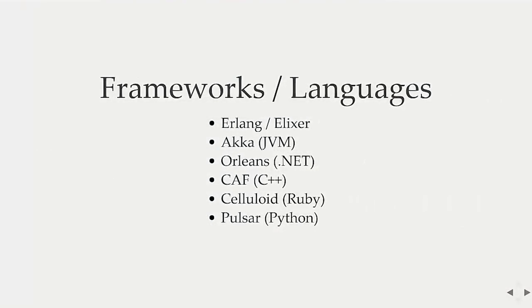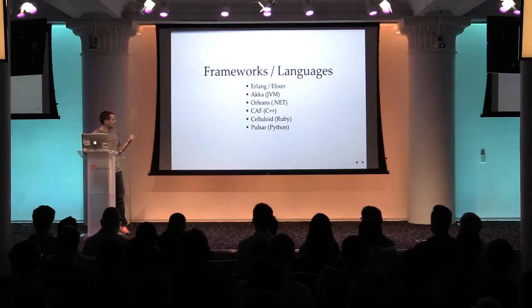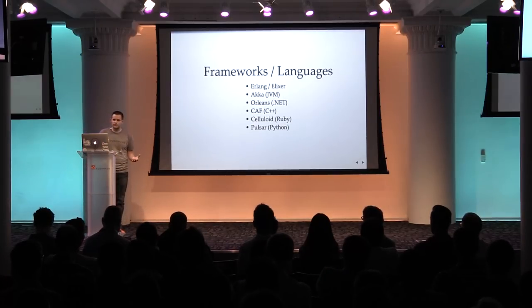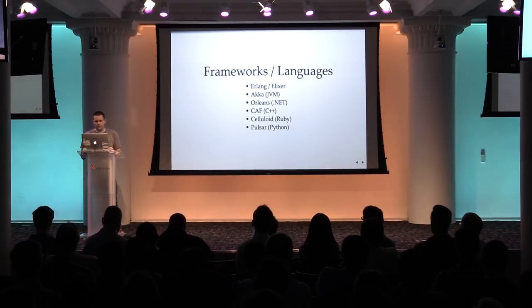The actor model isn't an abstract concept. After this talk, whatever your favorite language is, you can write some stuff in an actor model. Some popular implementations: Erlang and Elixir was one of the first real productionalized versions. Akka if you're on the JVM doing Java and Scala. Orleans for .NET — a fun fact is that the Halo multiplayer backend was written in Orleans. And there are implementations for C++, Ruby, Python, and most moderately popular languages.